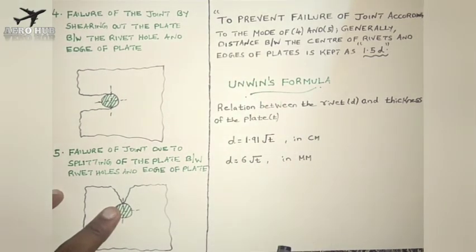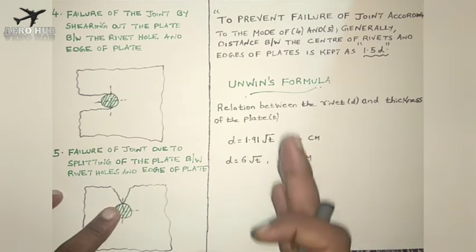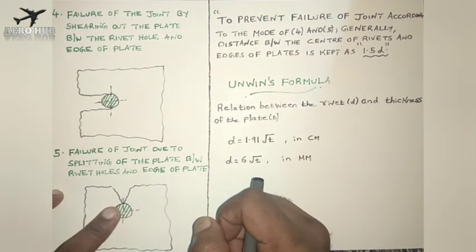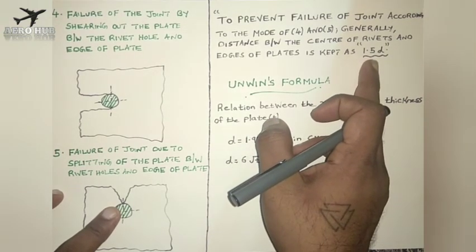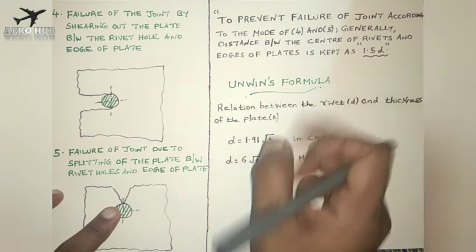We have five types of failure: the first is tension failure of the plate; the second is shear failure of the rivet; the third is bearing failure, which can happen to the rivet as well as the plate; and the fourth and fifth failures occur mainly at the edge of the plate and can be avoided by providing an edge distance of 1.5d, where d is the diameter of the rivet.